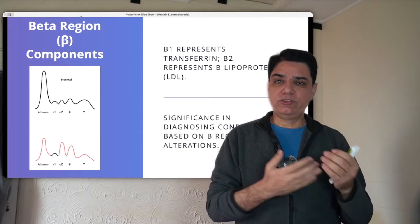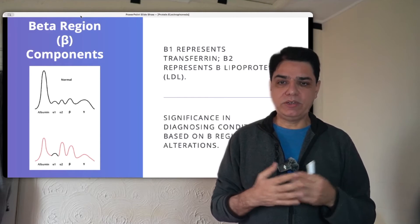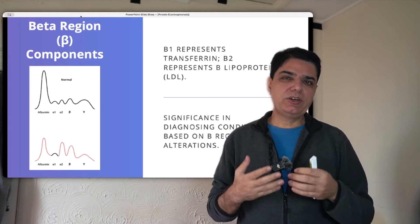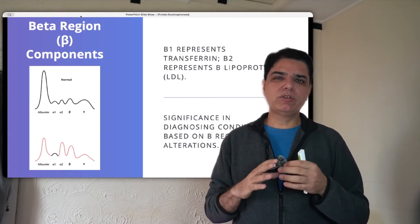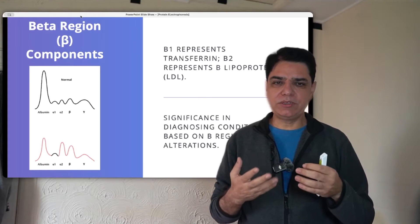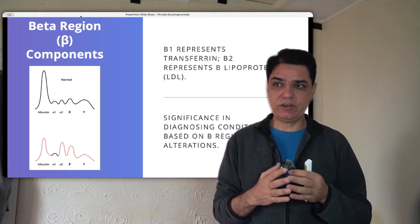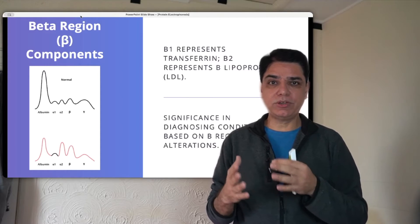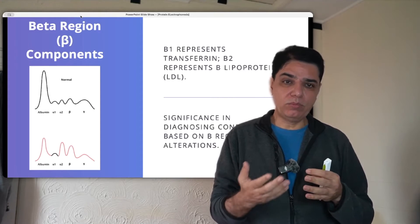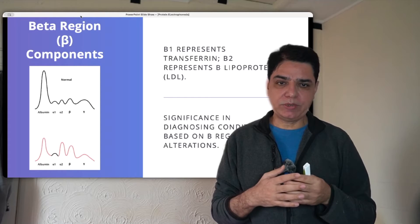The third hump, next to alpha-1 and alpha-2, is the beta region or beta globulins. Beta globulins are subdivided into beta-1 and beta-2, though on the electrophoresis we usually just refer to the beta hump. Beta-1 is transferrin, the transporter protein for iron, while beta-2 is beta-lipoprotein, or LDL.